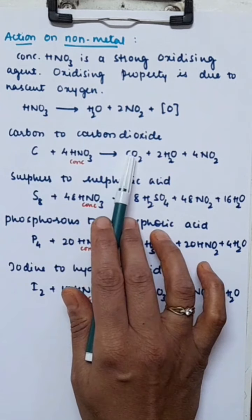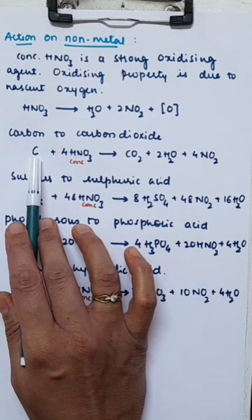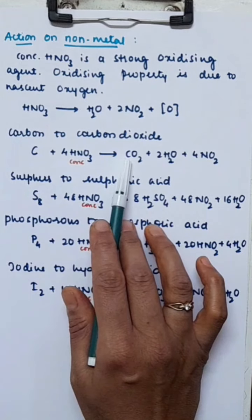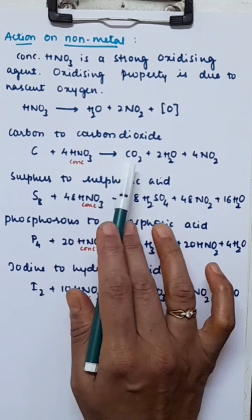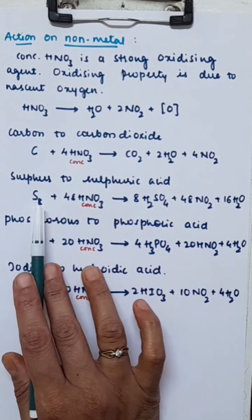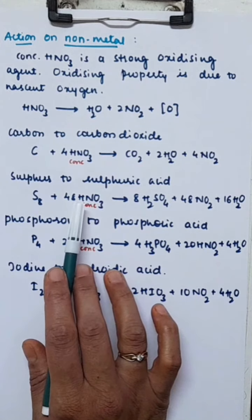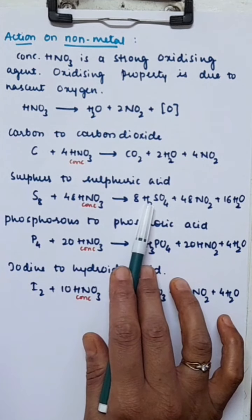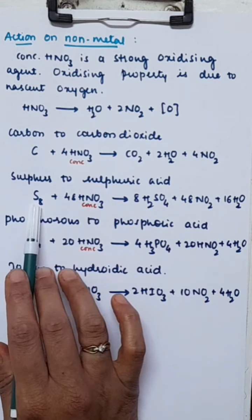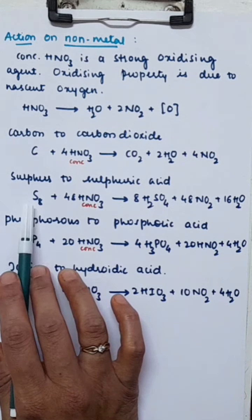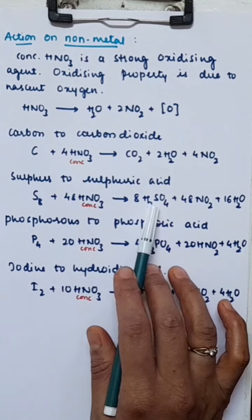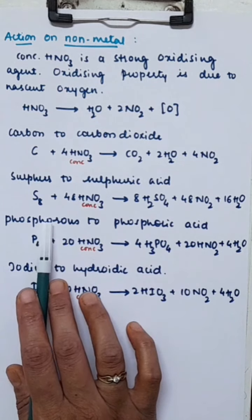It oxidizes carbon to carbon dioxide — the oxidation number of carbon goes from zero in its elemental state to plus four in CO2, which is an increase and therefore oxidation. Similarly, sulfur in its elemental state (S8) is oxidized to sulfuric acid (H2SO4) with liberation of nitrogen dioxide and water. The oxidation number of sulfur goes from zero to plus six.